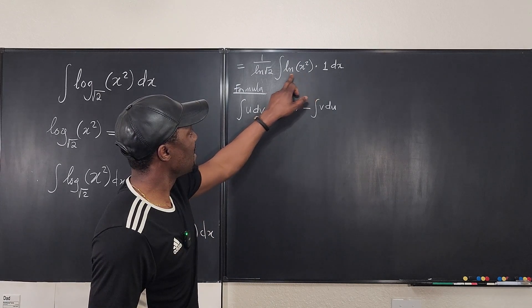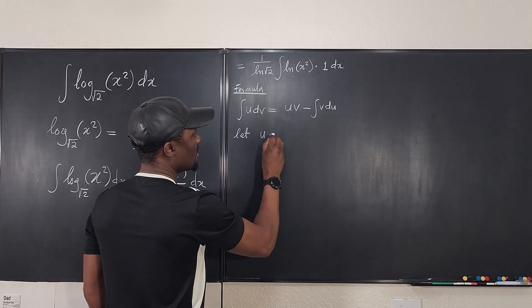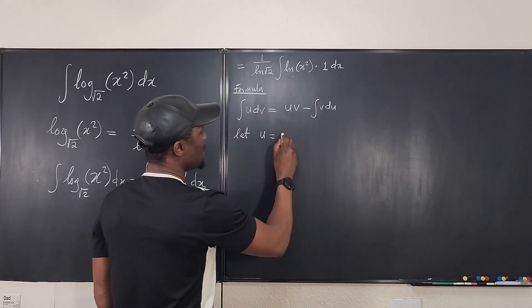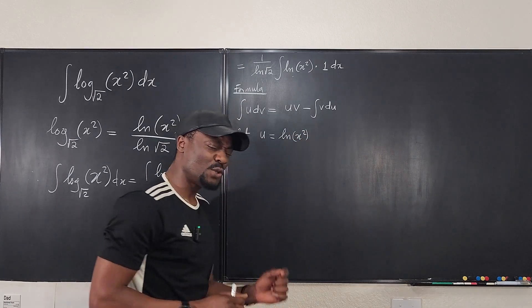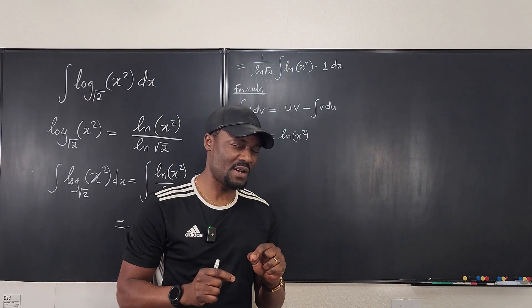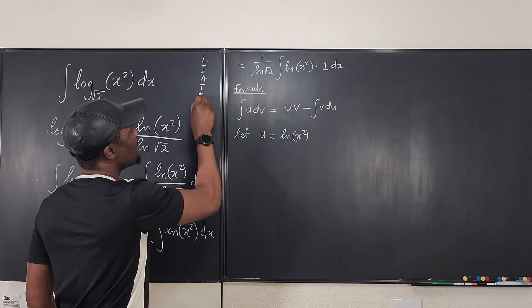We have assigned this to be our u, so we say let u be equal to ln of x squared. Now, why did I choose u to be ln of x squared? Always use the LIATE ranking.